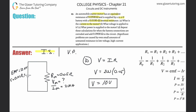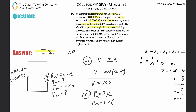Part C: what power is supplied to the motor? I can choose any power formula. I'll use P = IV. The power of the motor equals the current to the motor times the voltage supplied to the motor. That's 200 times 10, which comes out to 2000 watts.